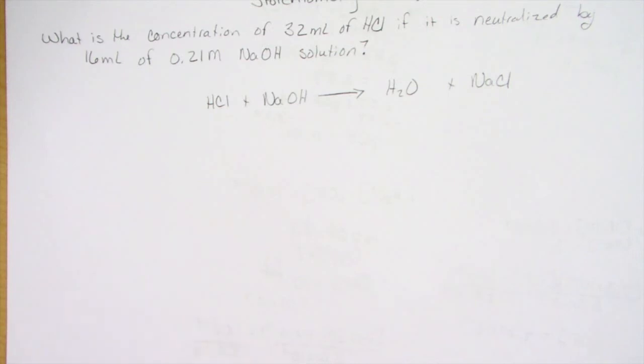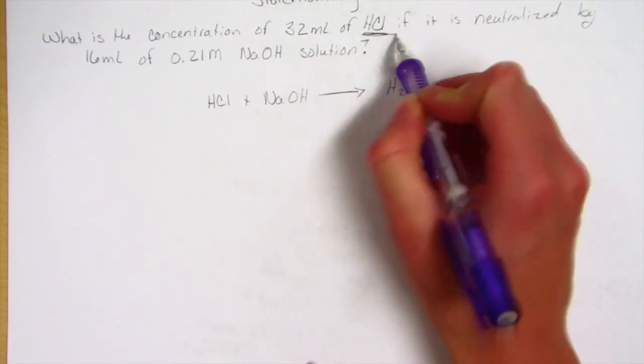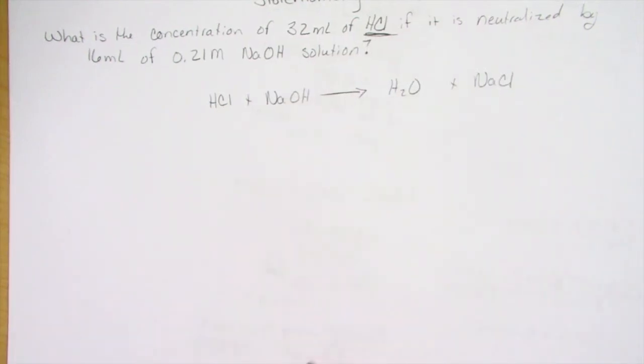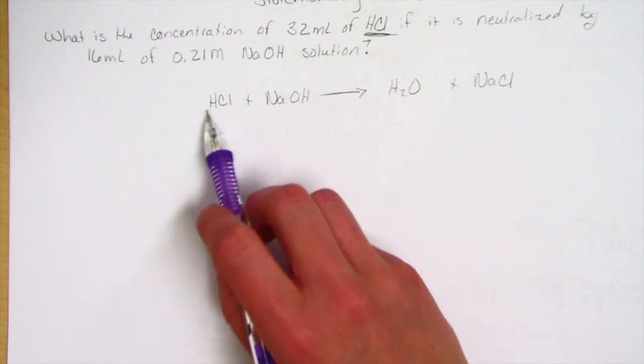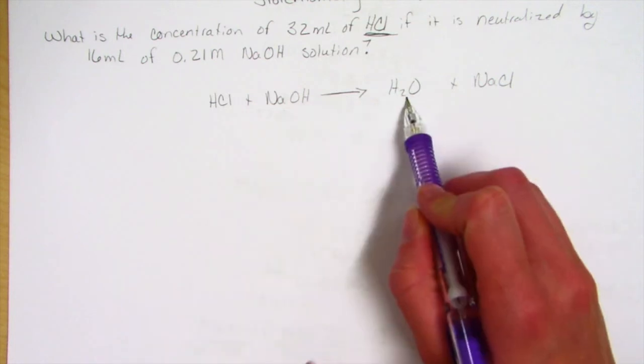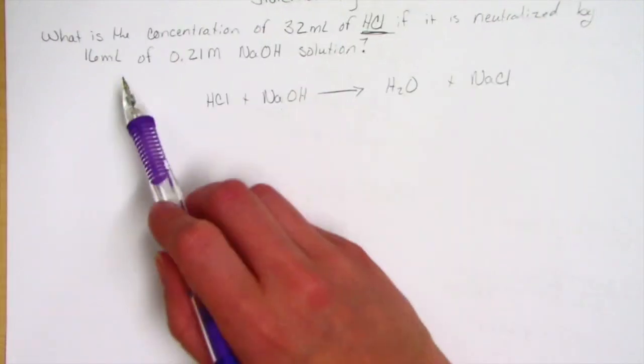You can use the BCA to determine how many moles were in your original sample and then figure out the concentration that way. What we have here is looking for the concentration of HCl if it is neutralized. We use up all of the NaOH, using HCl and NaOH to make water and the salt.